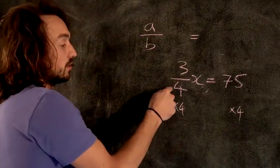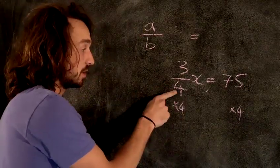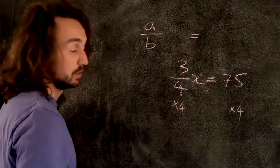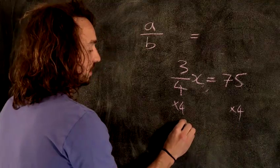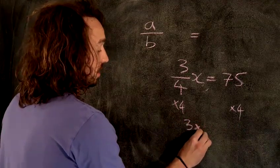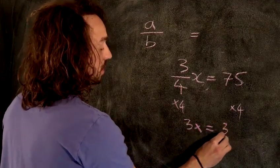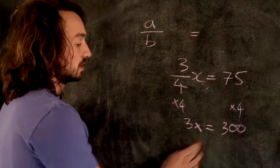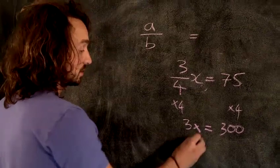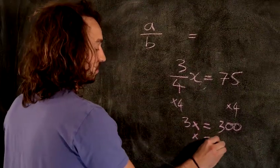Over here is on the bottom, that means divided by four. To get rid of it, I have to multiply by four. So if I multiply the left by four, I multiply the right by four, and I'm left with this: three X equals three hundred. You multiply four by 75, it's three hundred. And so, X equals one hundred.